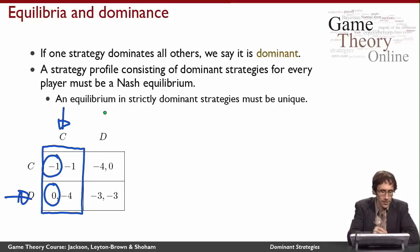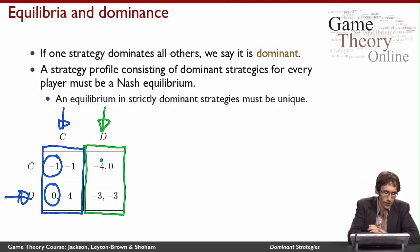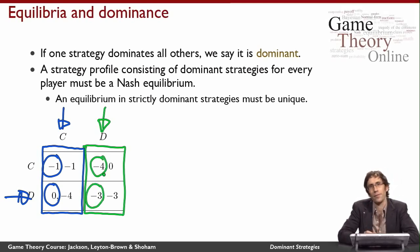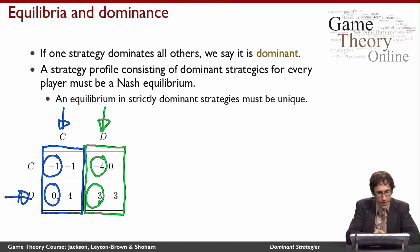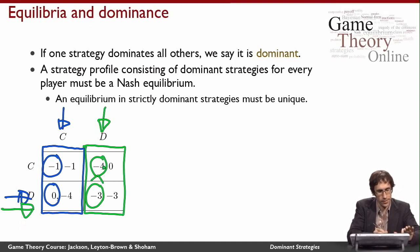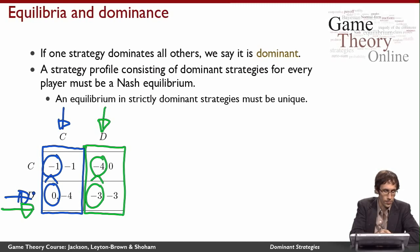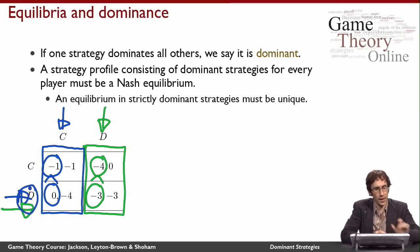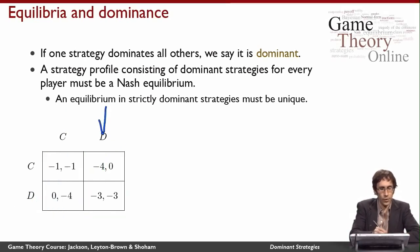On the other hand, let's consider the case where player two is playing D. In this case, player one finds himself in the green column, facing a choice between a payoff of minus four and a payoff of minus three. Both of these numbers are smaller than before, so he likes the blue column better than the green column. But if he is in the green column, he still prefers to get minus three rather than minus four, and that means he again prefers to play D. So regardless of what player two does, player one best responds by playing D, and in both cases his preference was strict — meaning he has a strictly dominant strategy.